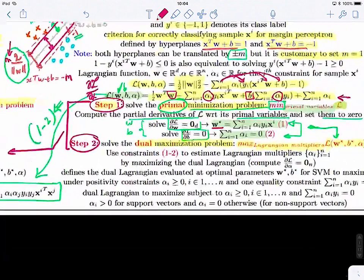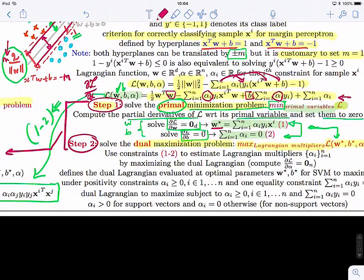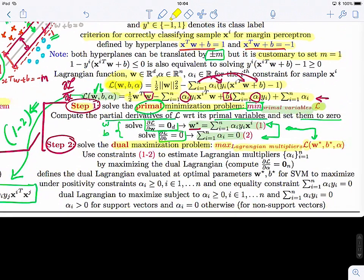So what I would like you to keep in mind: first defining the primal minimization problem, then once solving it, using the constraints to update the Lagrangian. Once you update the Lagrangian, you get the new Lagrangian with the constraints. Then you maximize it over the space of the Lagrangian multipliers. That's the main idea.